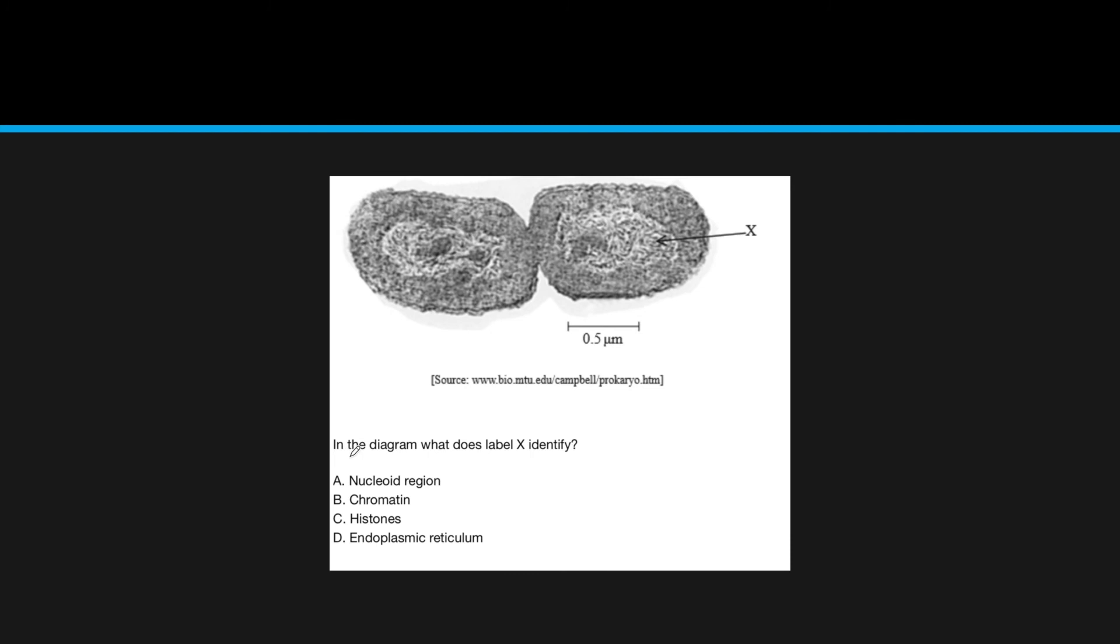So, here's another question. Label the diagram, and what does X identify? So, immediately, you'll kind of want to see what type of cell is this. Since you know it's a prokaryotic cell, you can immediately get rid of histones and endoplasmic reticulum. Chromosome is going to be this nucleoid region.